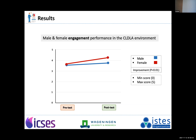Now I will show you the results in terms of the differences between male and female students with regard to engagement performance. As you can see, the starting point of both males and females was almost the same, about 3.5. But in the post-test, females improved much more than male students, meaning the engagement of females was much better than males when using this framework.